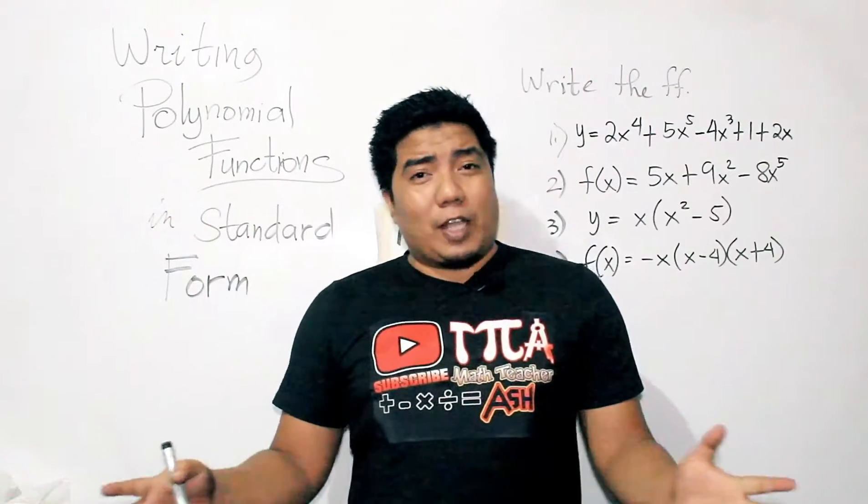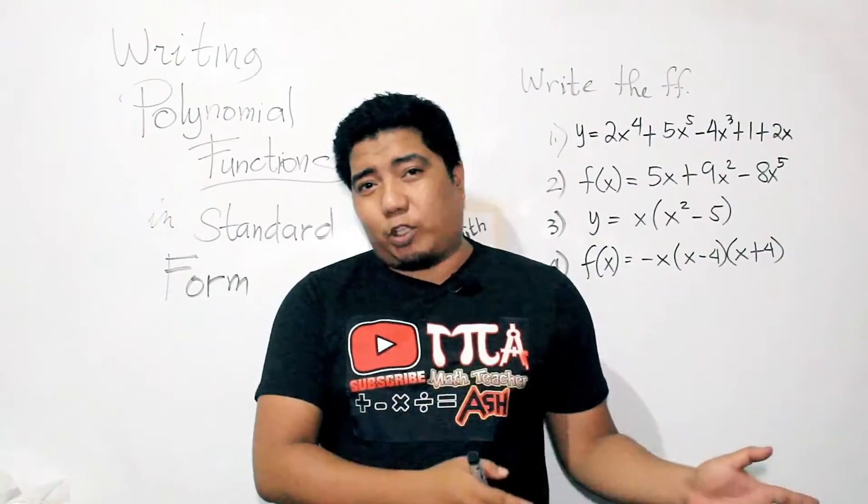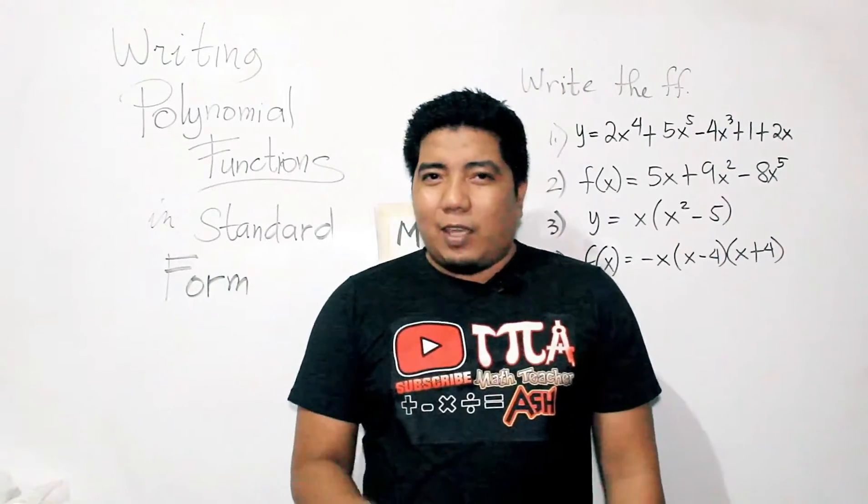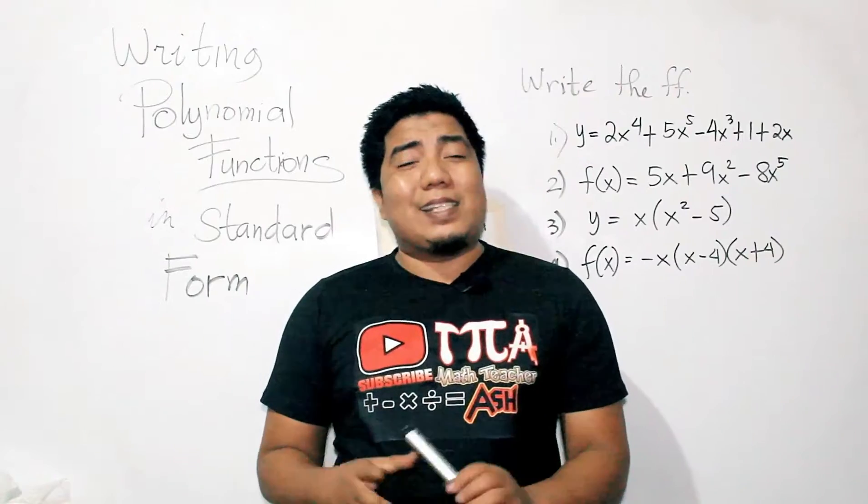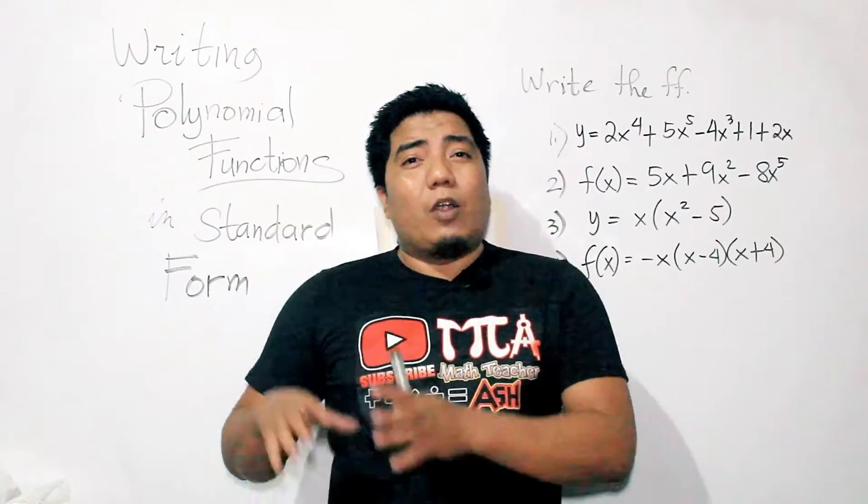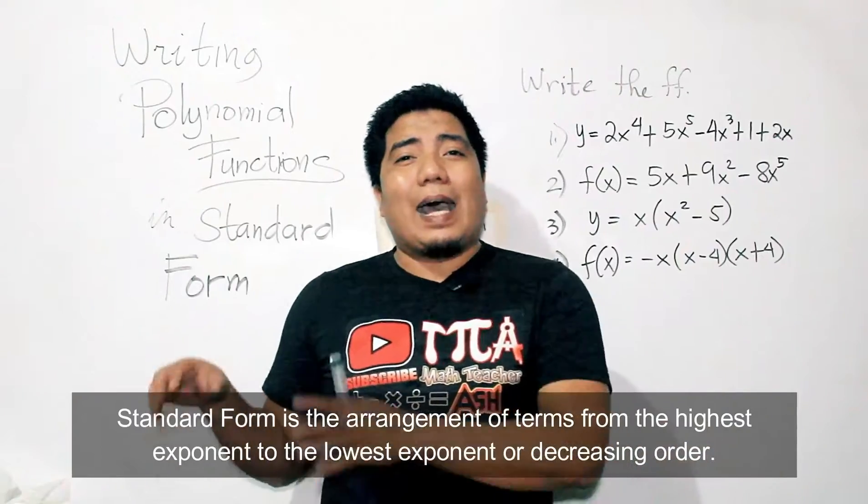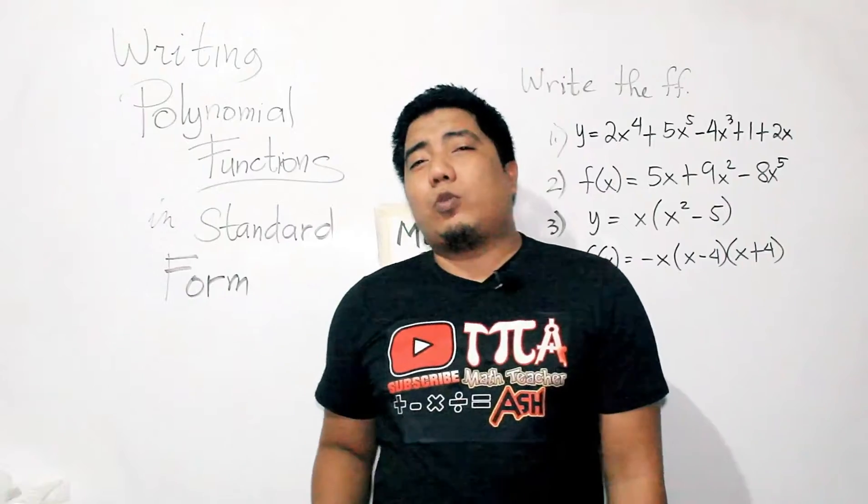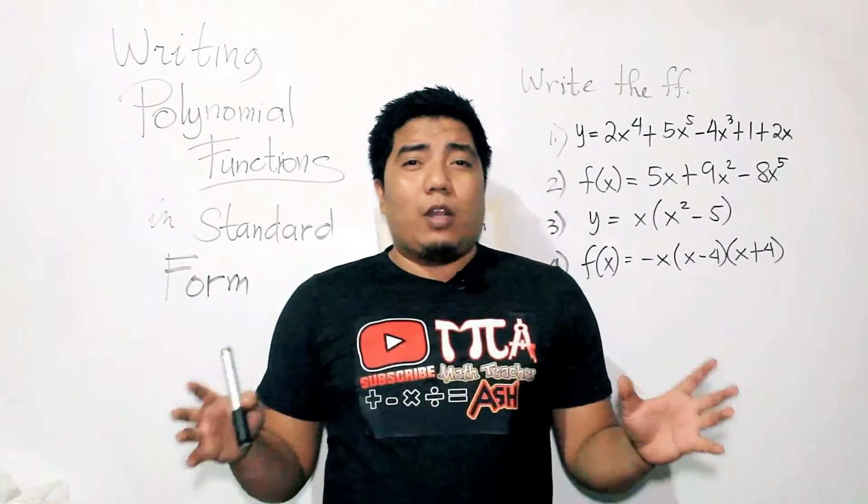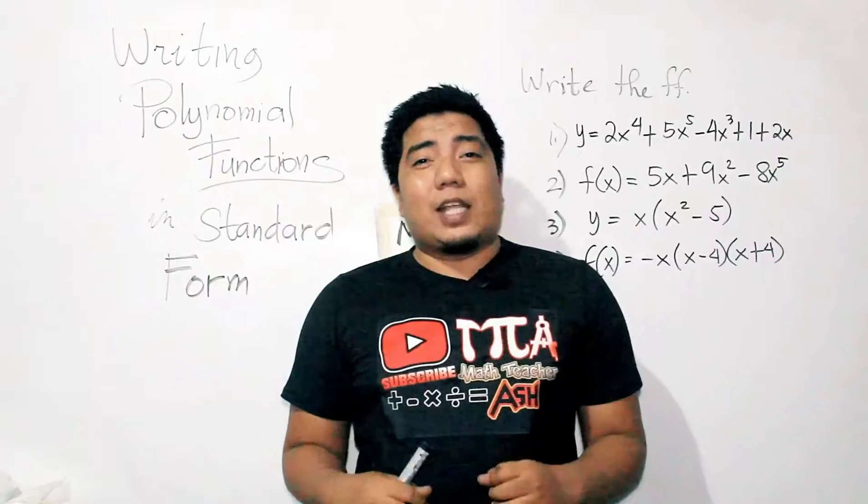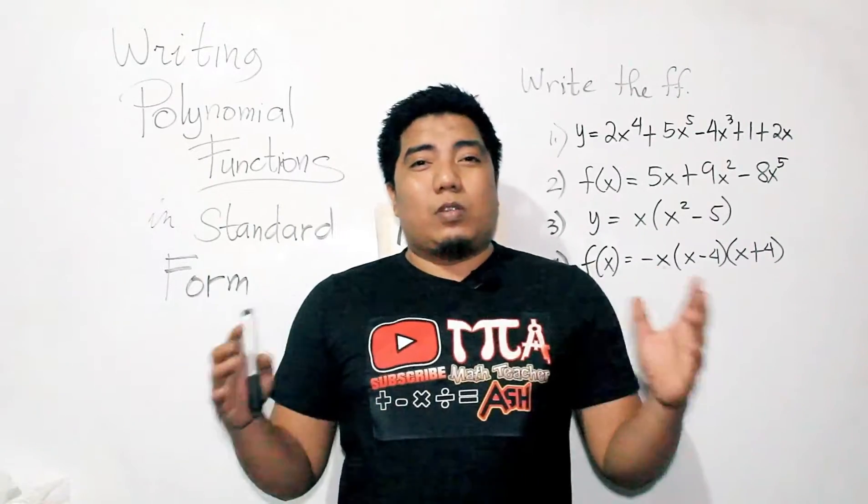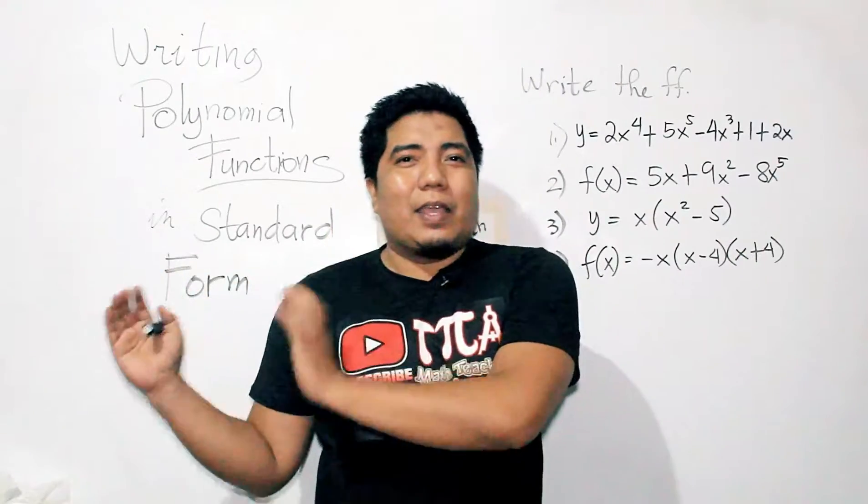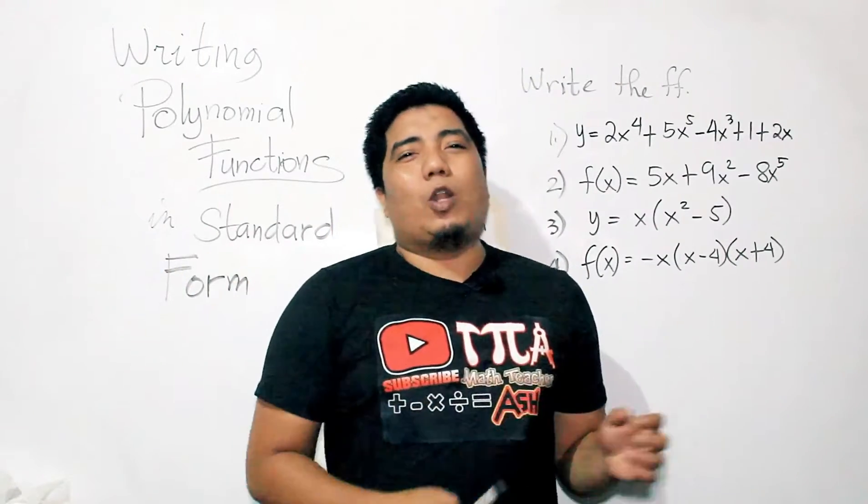Polynomial functions can be written in standard form and factored form. The factored form will be discussed in the next video. But for today, we'll talk about how to write this in standard form. The standard form is basically writing the terms from the highest exponent down to the lowest exponent. Basically, what you need to do is just arrange the whole given function such that there will be no parenthesis, that the things will be expanded, and the terms are arranged from the highest exponent down to the lowest exponent.